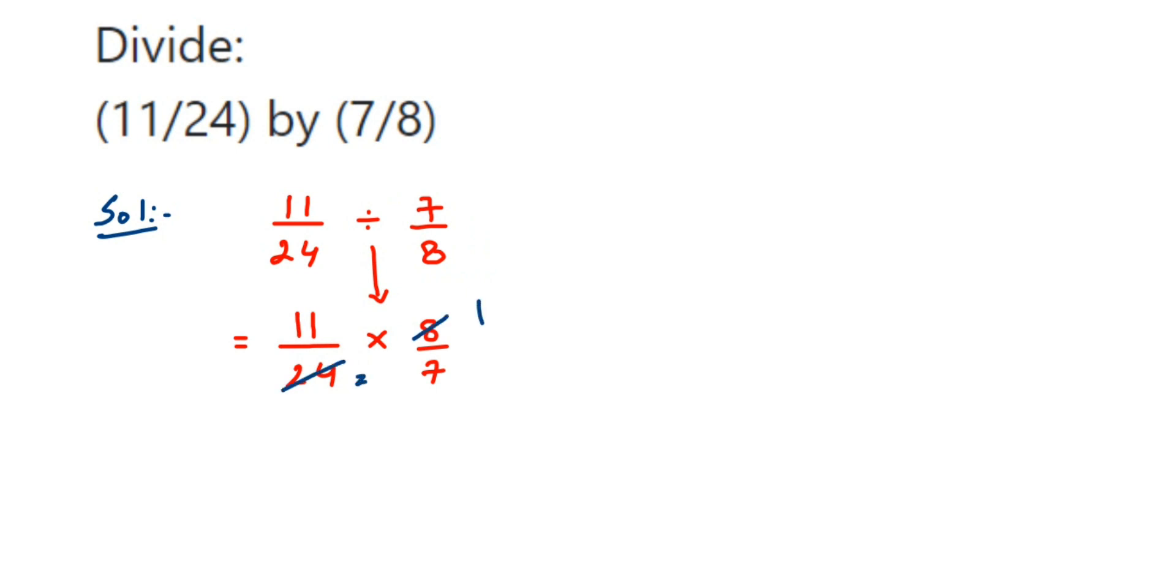Now I cannot cancel any number further, so just multiply. When you're multiplying, multiply the numbers in the numerator. So in the numerator I have 11 and 1, so 11 ones are 11.